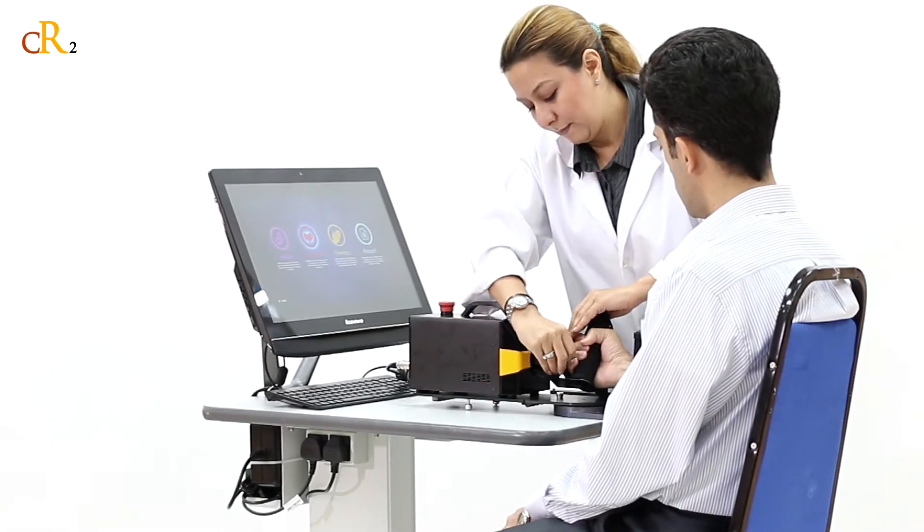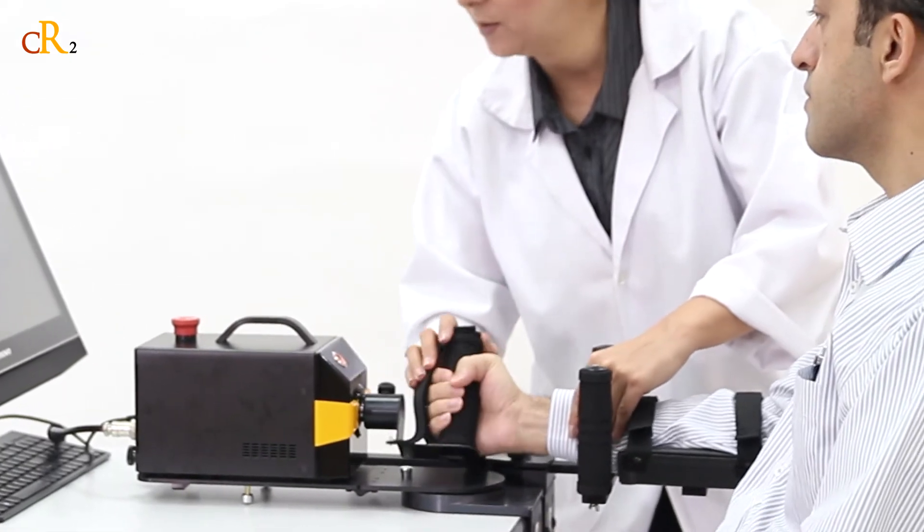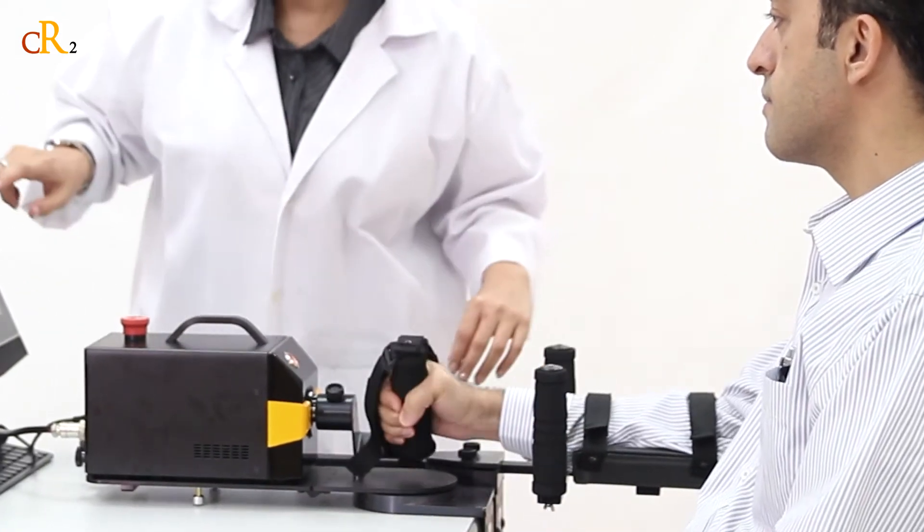CR2 Haptic is a compact and portable rehabilitation robot which provides exercise training for forearm and wrist movement.